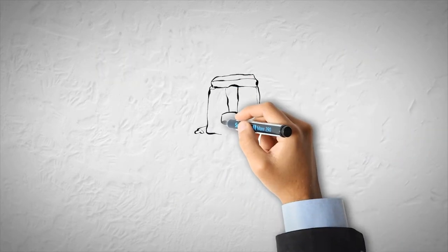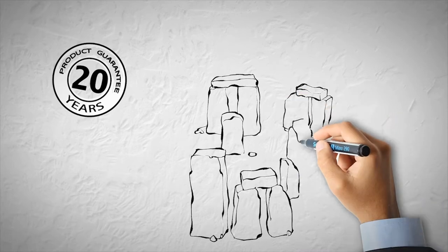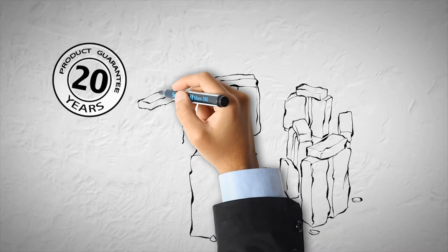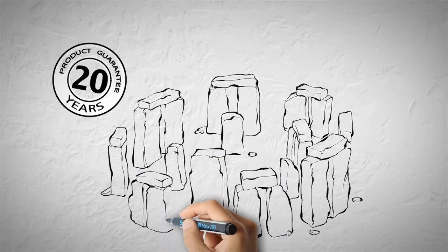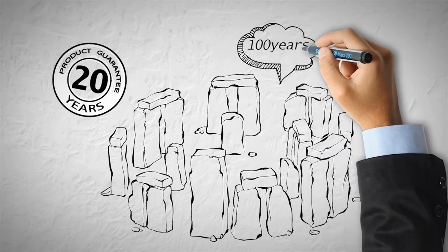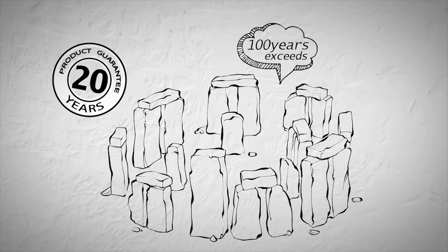Asbestoseal comes with a 20-year product guarantee when installed by an approved installer. And whilst other coatings claim life expectancies of up to 20 years, accelerated weather testing on Asbestoseal exceeded 100 years.